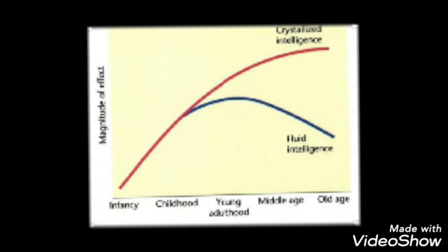And the reason why fluid intelligence decreases as you reach about 30 might be because the neurons of your brain, as synapses often occur and when they begin to decrease in numbers.